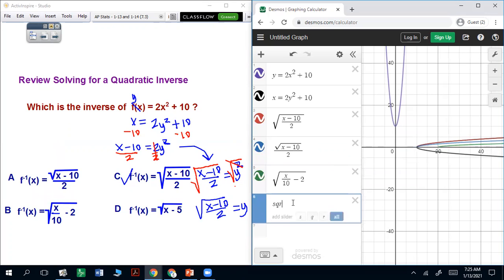And then if you do the last one, sqrt x minus 5, that's off. So the only one that actually has any overlap is this one, even though it's only the top part of it. So that's the answer.